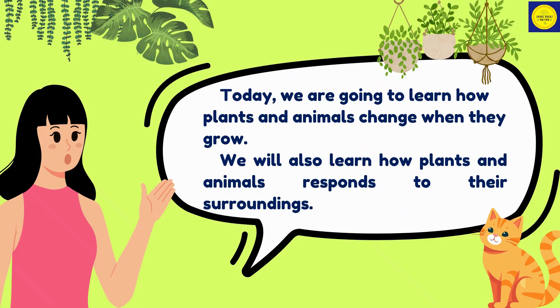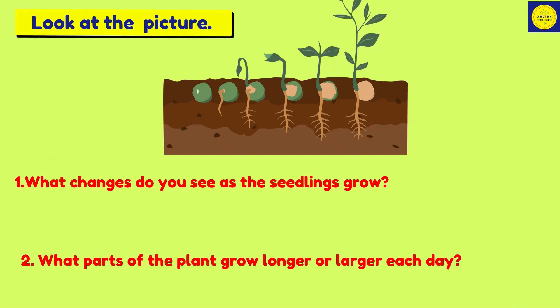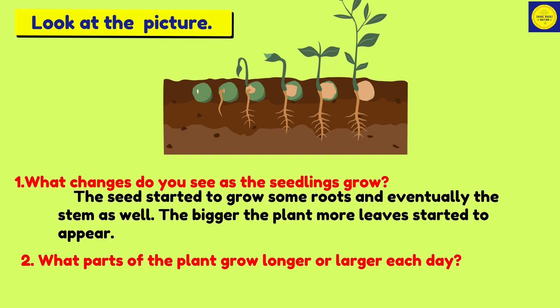Today we are going to learn how plants and animals change when they grow, and how plants and animals respond to their surroundings. Look at the picture. What changes do you see as the seedlings grow? The seeds started to grow some roots and eventually the stem as well. The bigger the plant, the more leaves started to appear. What parts of the plant grow longer or larger each day? The roots and the stem.